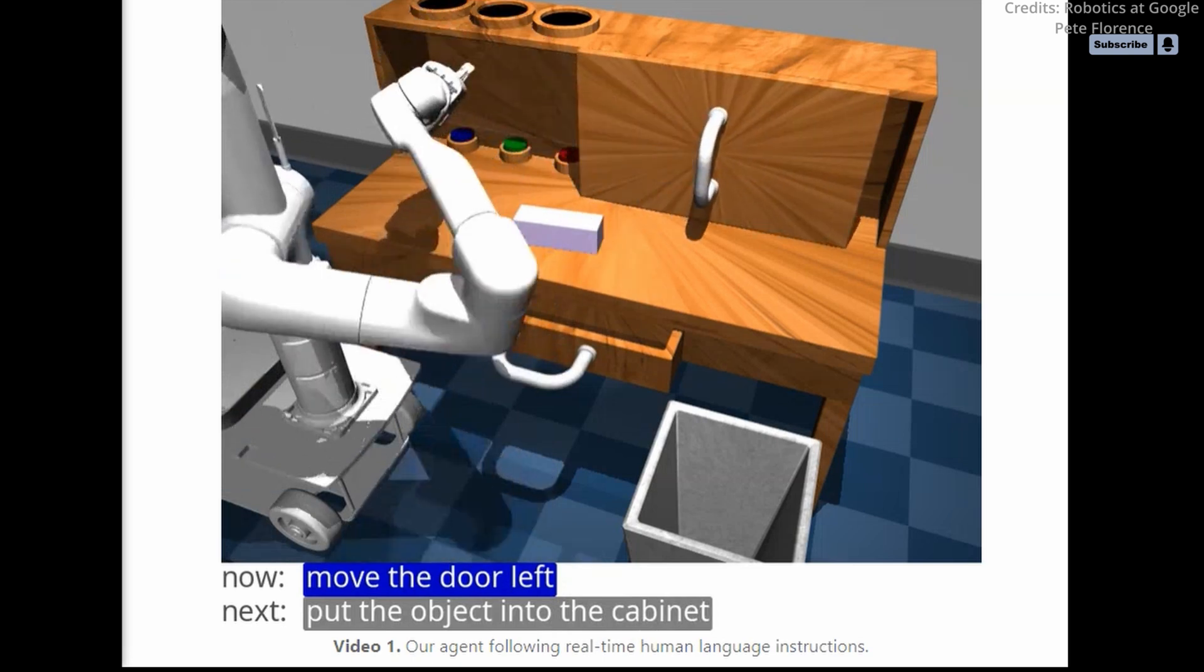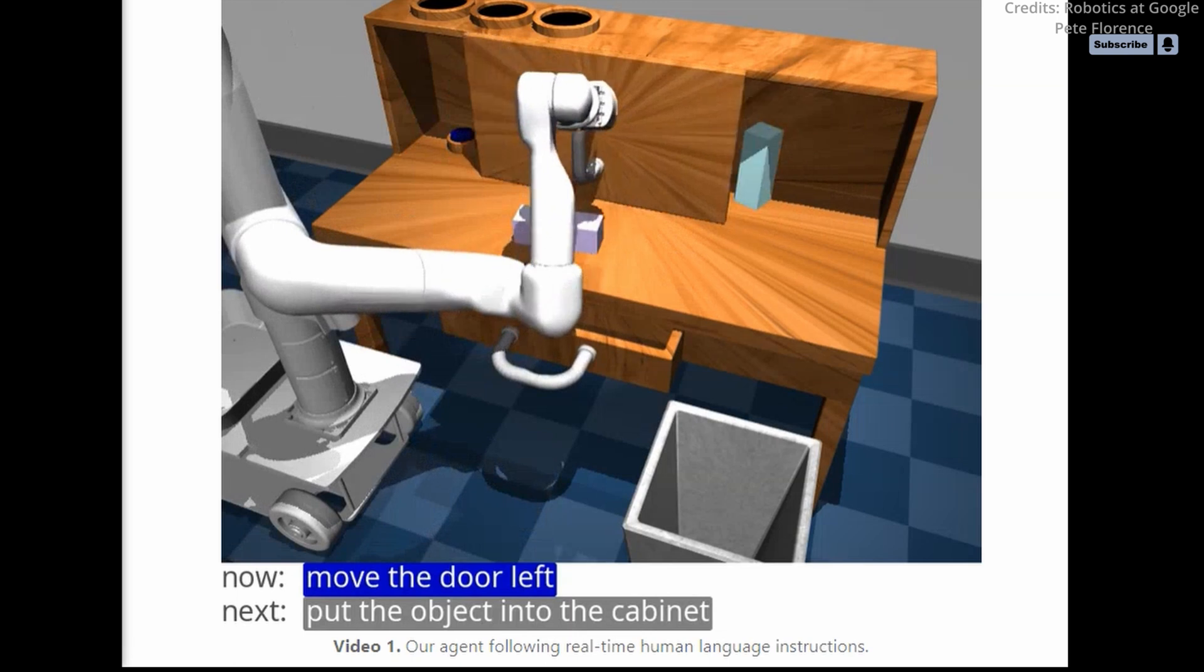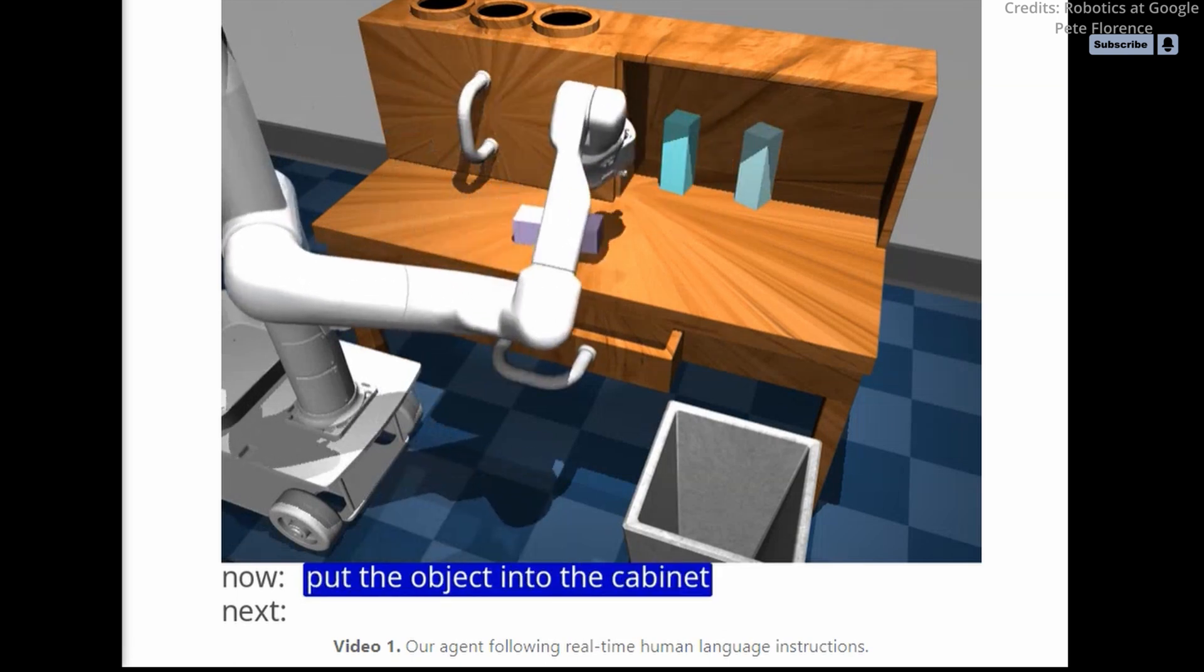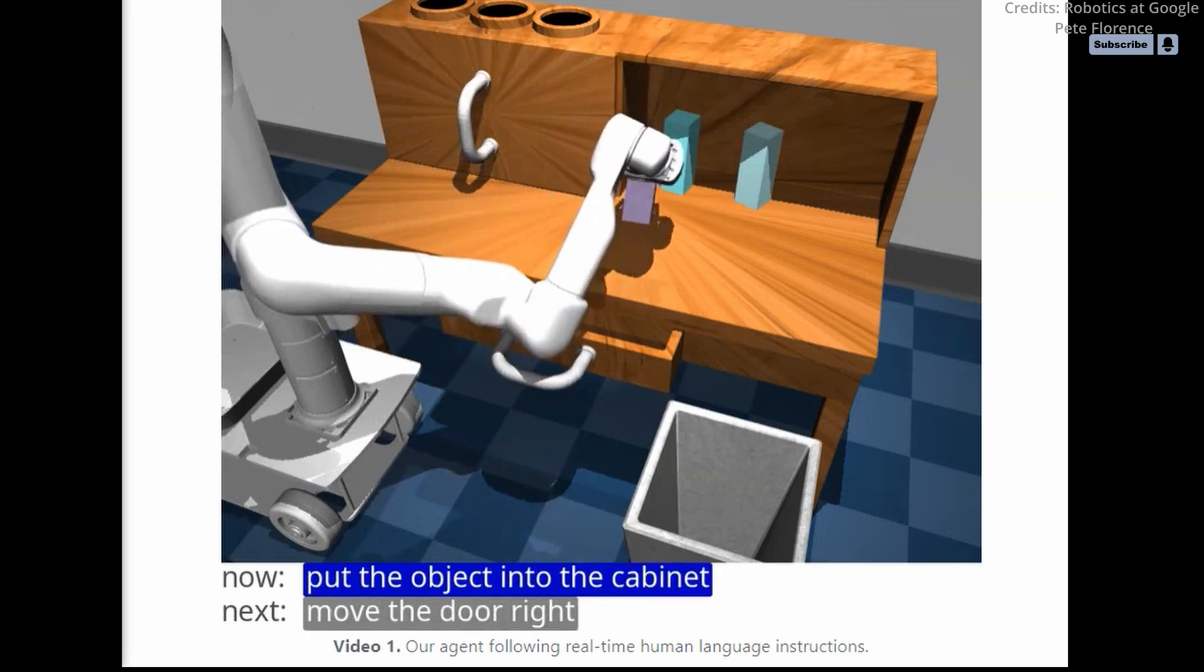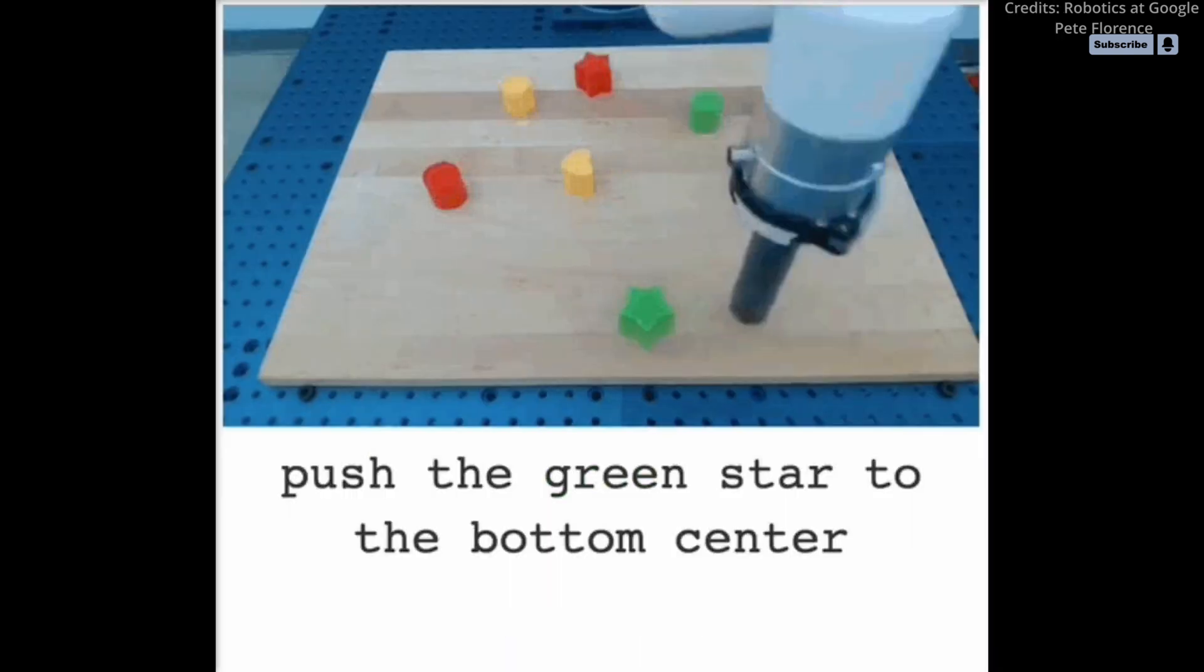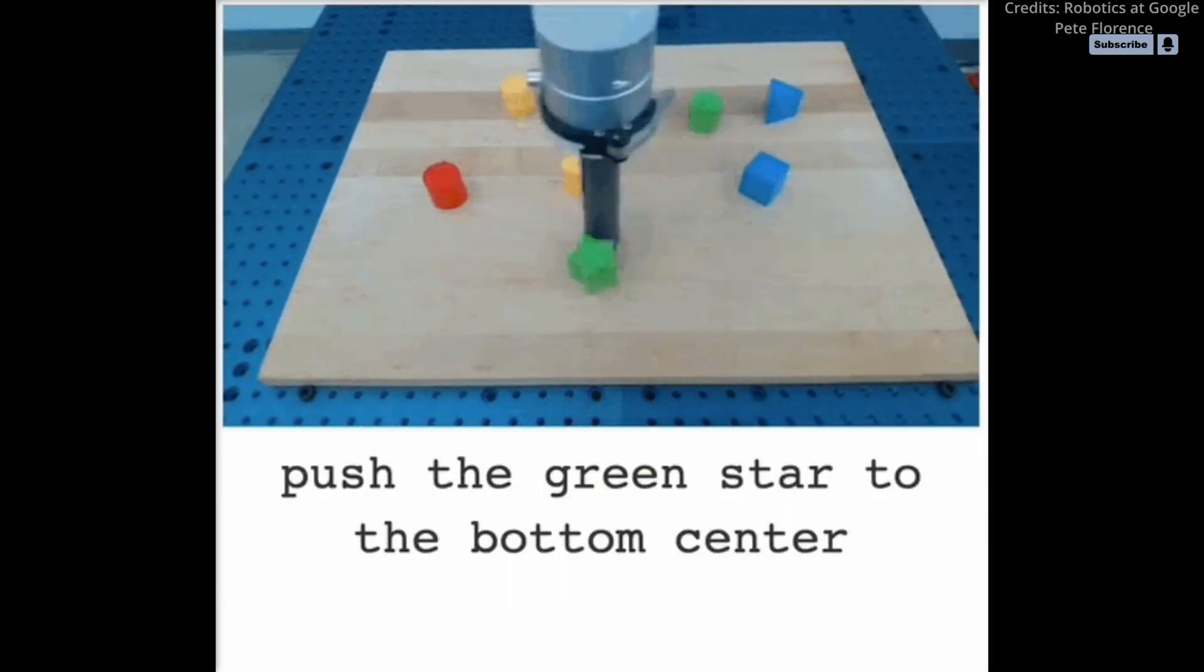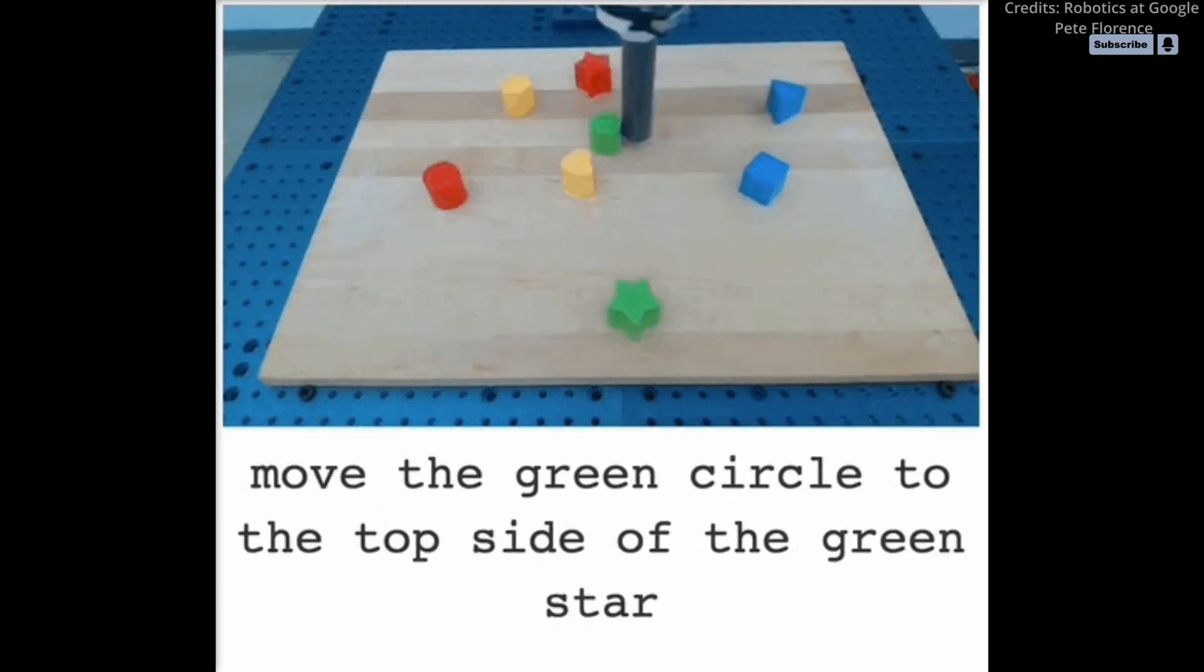In Interactive Language, Google AI researchers present a large-scale imitation learning framework for producing robots that can respond to real-time, open vocabulary language commands. After training with this approach, they find that a single policy is capable of responding to over 87,000 unique instructions, which is an order of magnitude more than previous works.